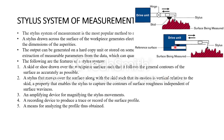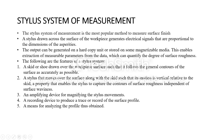Here is the asperity, and here is the stylus, and along with the stylus you have a skid. The output can be generated on a hard copy unit or stored on some magnetizable media. This enables extraction of measurable parameters from the data, which can quantify the degree of surface roughness. The stylus system contains a skid that draws over the workpiece surface such that it follows the general contour of the surface as accurately as possible.